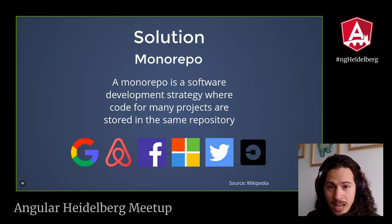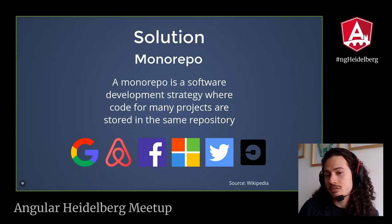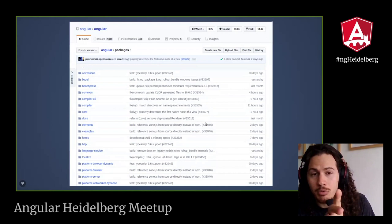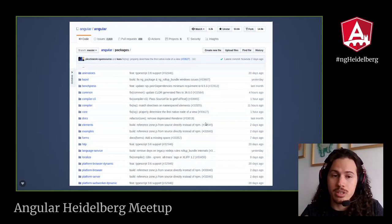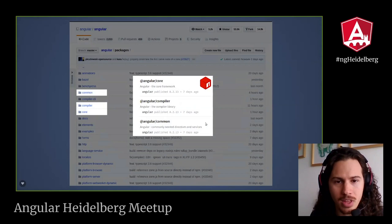We have a solution for this — it is called Monorepo. Monorepo is just a software development strategy where the code for many projects is stored in the same repository. This is the strategy that Google is taking — and not only Google, but also Airbnb, Facebook, Microsoft, Twitter, and Uber. A lot of big companies use this approach to manage their organizations. If we go to the Angular source code and look at the packages folder, we are going to find the 23 or more packages that compose the Angular ecosystem. So Angular is being built using a Monorepo.